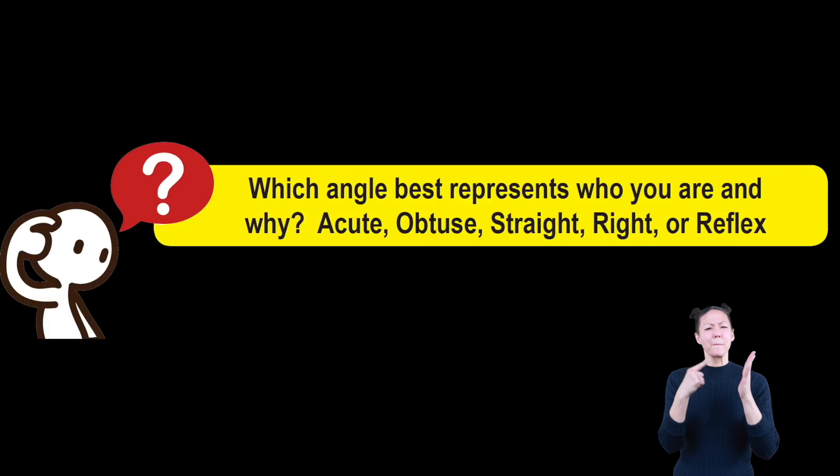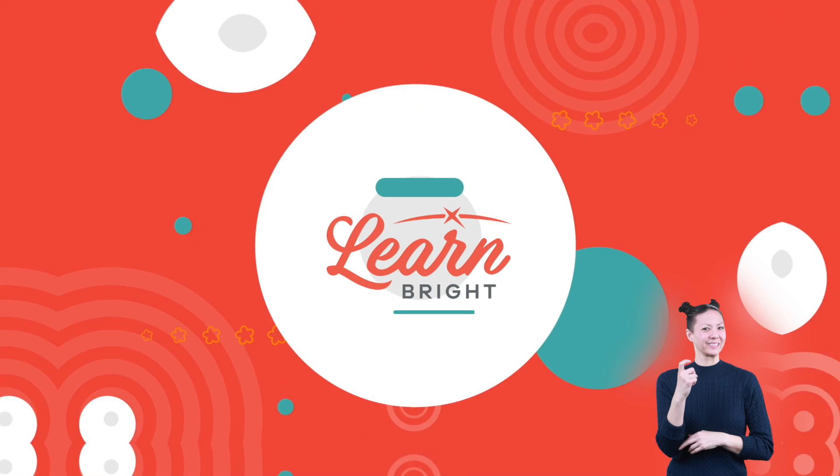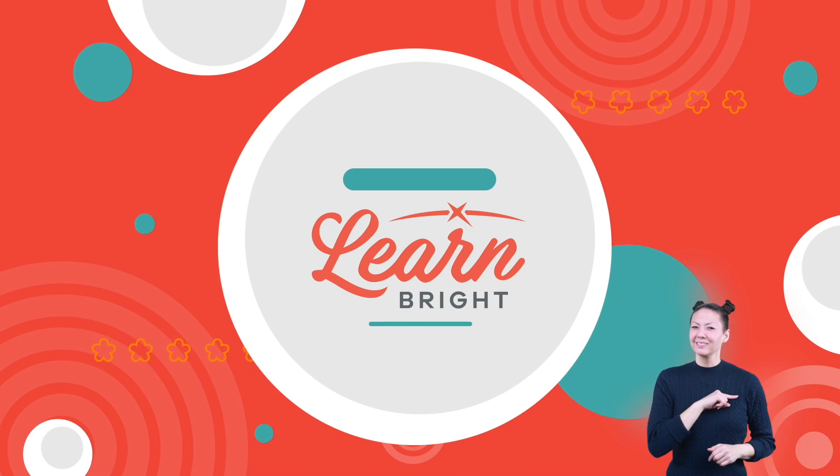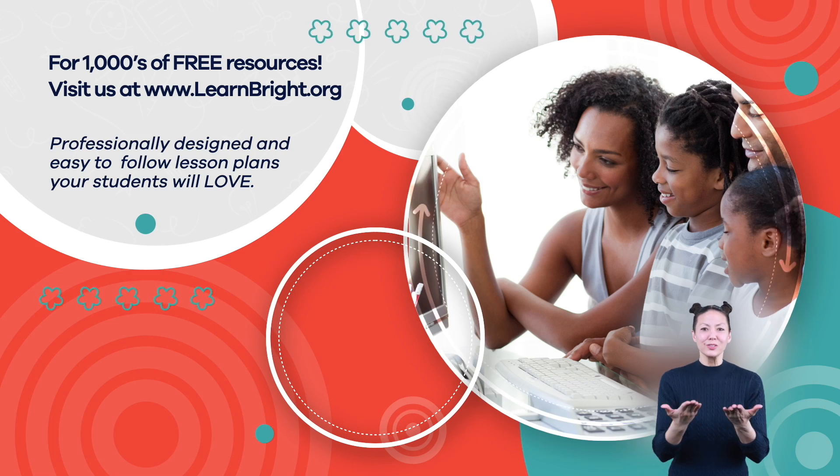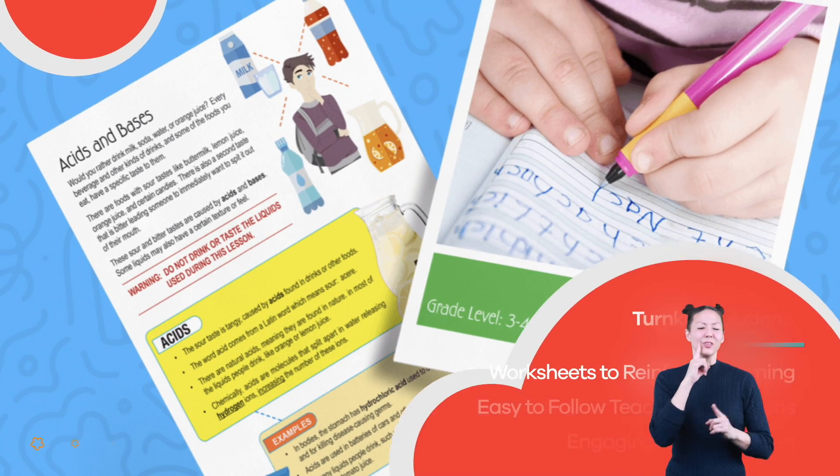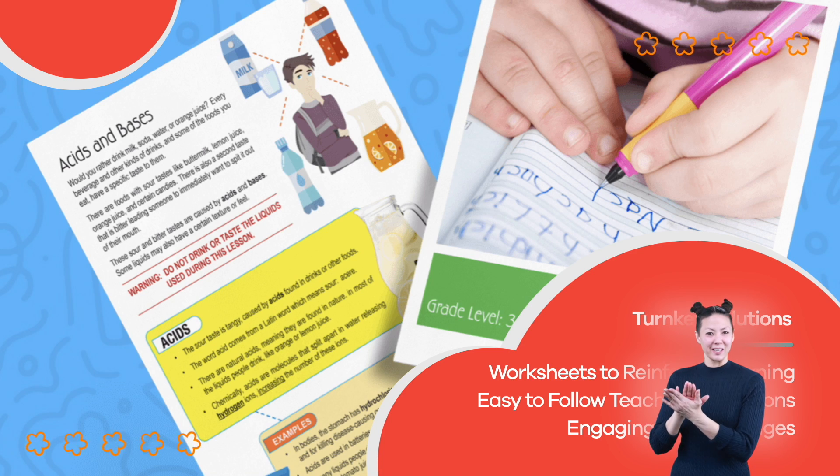Which angle best represents who you are and why? Acute, obtuse, straight, right, or reflex? Hope you had fun learning with us. Visit us at learnbright.org for thousands of free resources and turnkey solutions for teachers and homeschoolers.